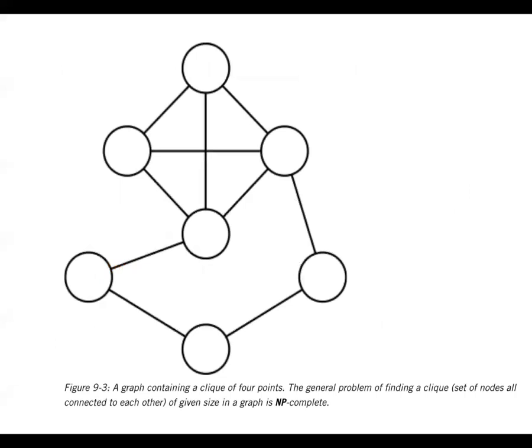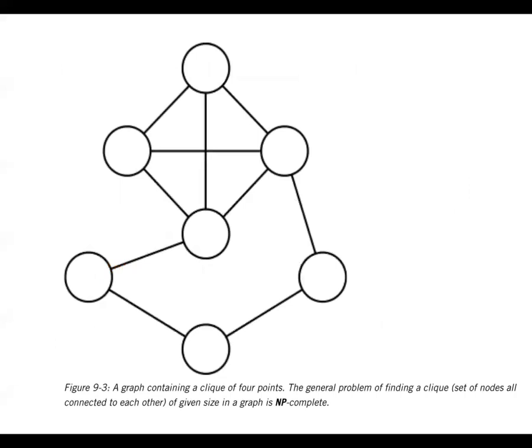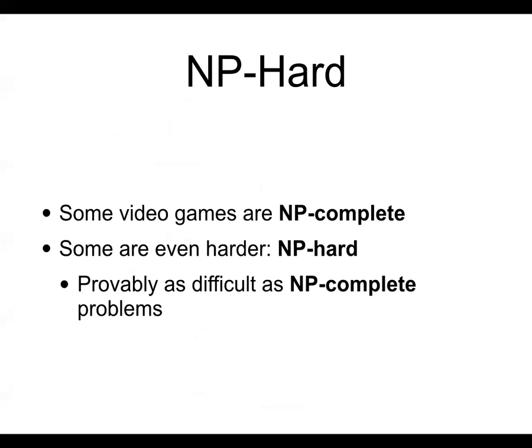Here's the clique problem. You have a group of people that are connected to each other. And the question is, is there a clique of a certain size? And you can see there's a clique of four up top, there's a clique of five in the bottom. Now for a small thing like this, you can just inspect it. But as the number of nodes grows, this problem becomes very difficult fast, like the traveling salesman problem. So some video games are NP-complete, some are even harder NP-hard. And the NP-hard problems are the ones that are as difficult as NP-complete problems, and they suspect they're even harder.